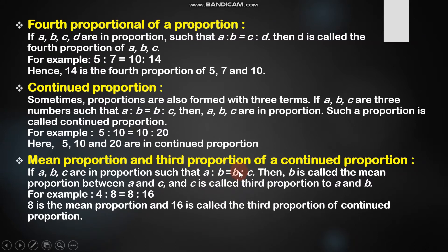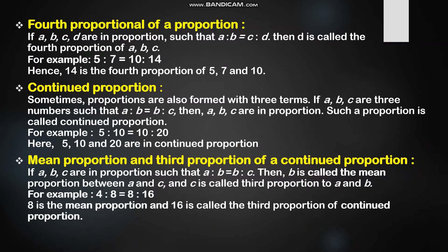The last terms are mean proportion and third proportion. In a continued proportion with three terms, the middle term repeated twice is called the mean proportion. B is called the mean proportion between A and C if A ratio B is proportional to B ratio C. For example, in 4 ratio 8 proportional to 8 ratio 16, the number 8 is the mean proportion and 16 is the third proportion of the continued proportion.